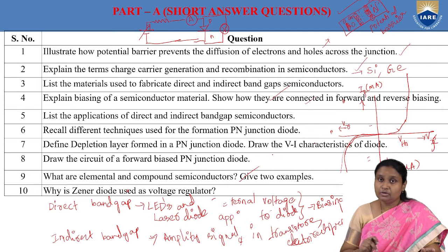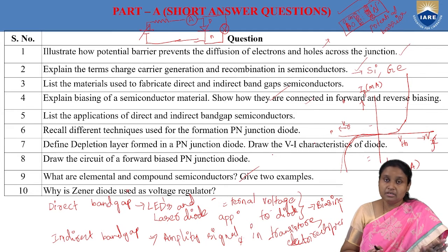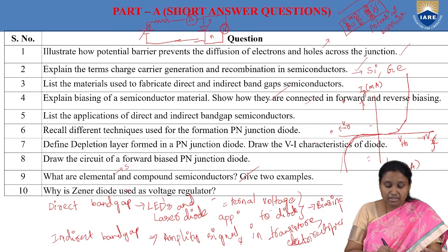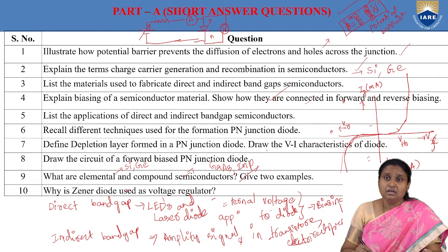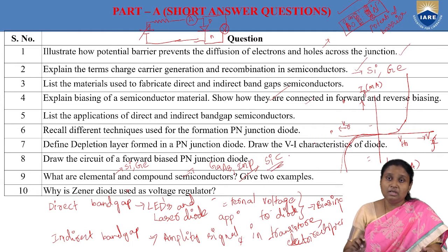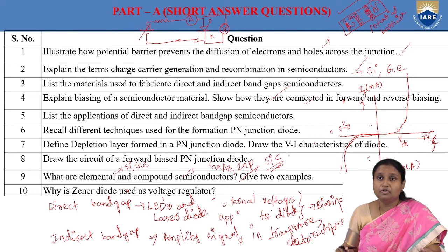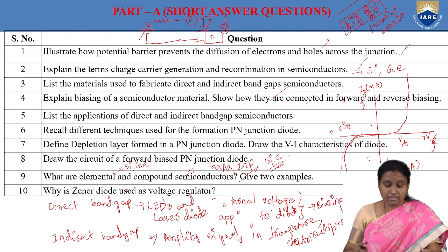Elemental semiconductors — examples are silicon and germanium. Compound semiconductors include gallium arsenide, indium phosphide, and silicon carbide — these are all examples of compound semiconductors.